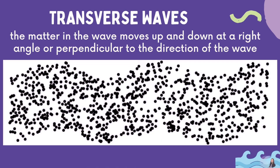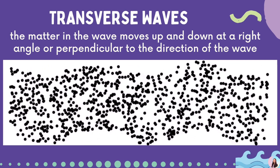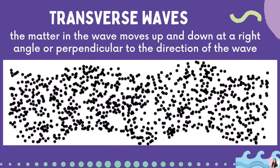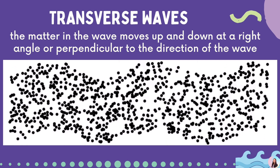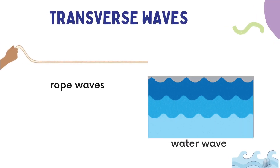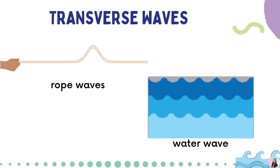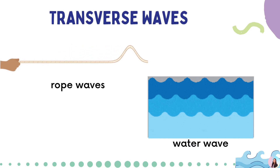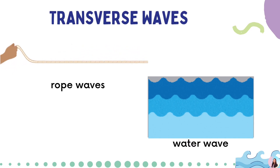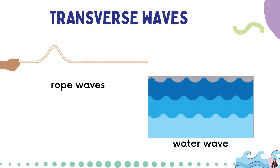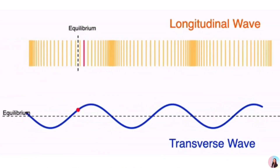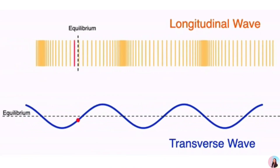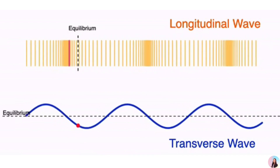In a transverse wave, the matter in the wave moves up and down at a right angle or perpendicular to the direction of the wave. Examples of transverse waves are rope waves and water waves. Again, this is the difference between a longitudinal wave and a transverse wave.